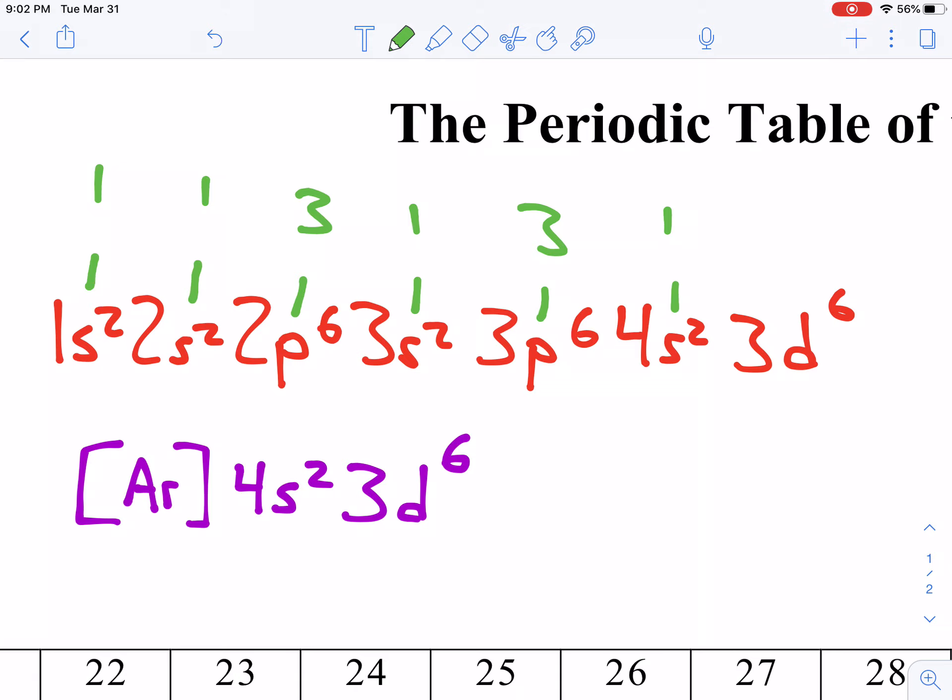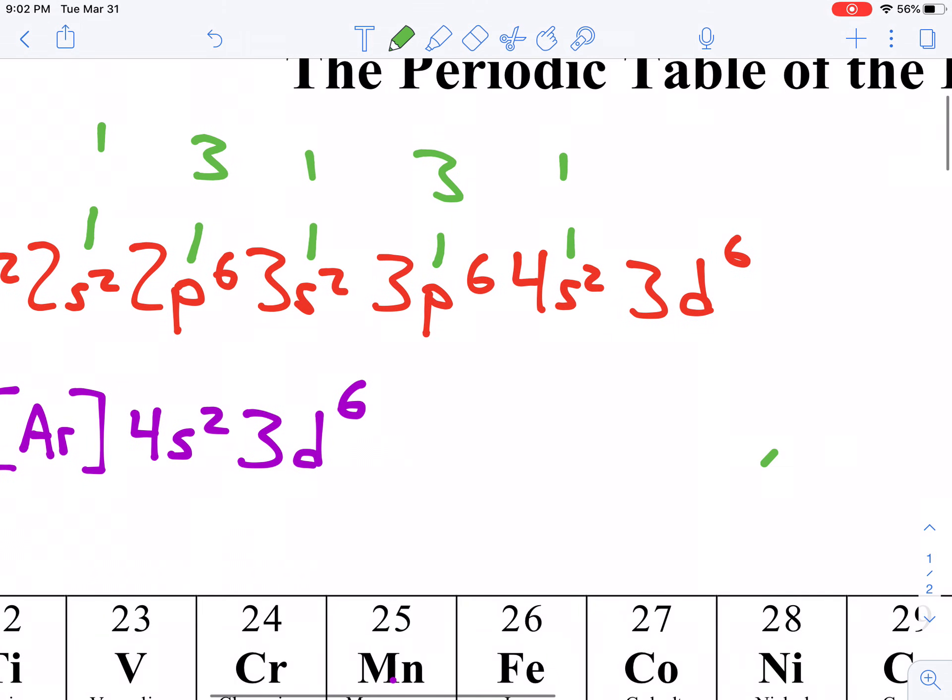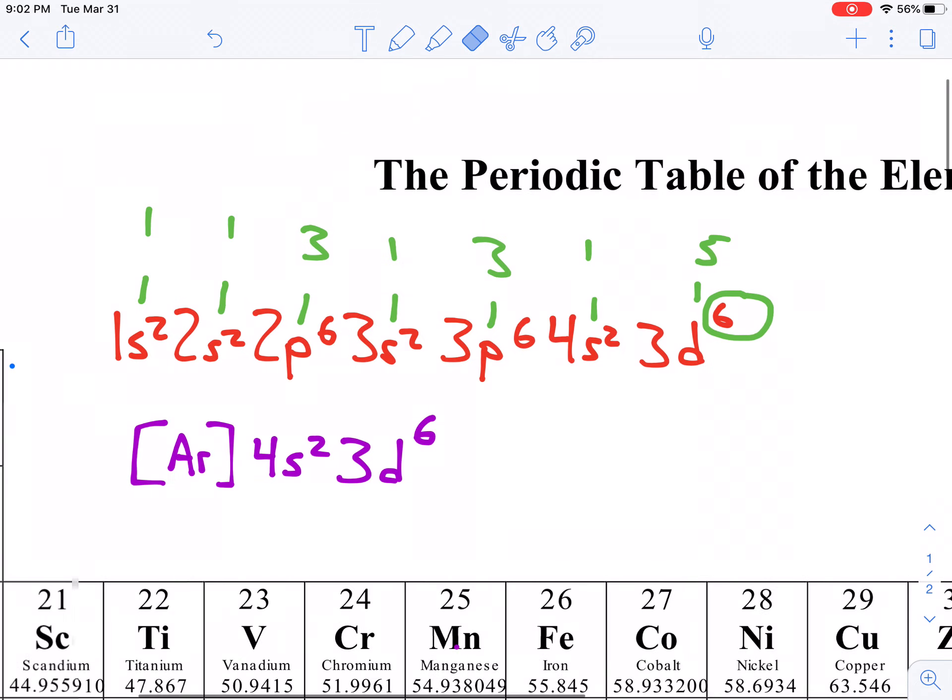And then, it says, how many electron-containing orbitals are in an atom of iron? Well, in the D sublevel, there are 5 orbitals. And, they all have an electron, because we've gotten up to 6 electrons. And, we fill one at a time. So, to answer a question like letter A, if we have the entire electron configuration written out, our life becomes easier, because we just add up those green numbers. So, we have 1 plus 1 is 2, plus 3 is 5, plus 1 is 6, plus 3 is 9, plus 1 is 10, plus 5 is a grand total of 15 electron-containing orbitals.